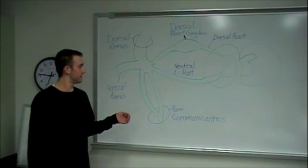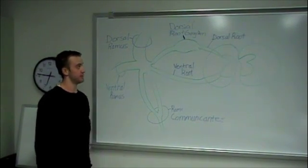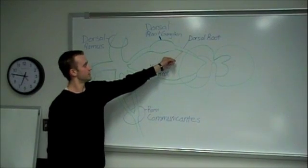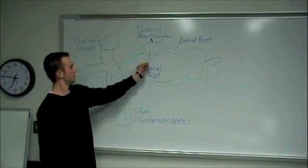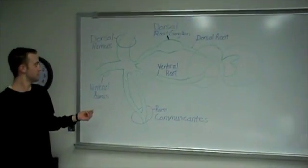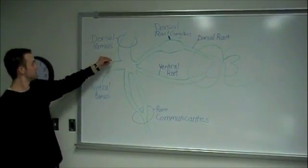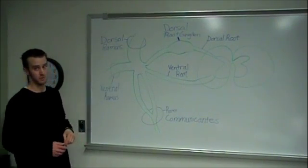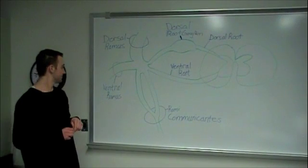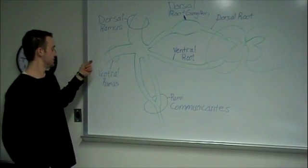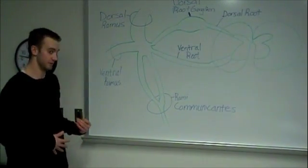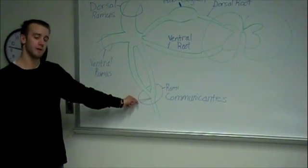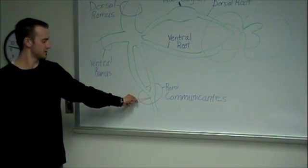Here we have a rough drawing of the spinal cord — look in your book for a better picture. We can see the gray matter, your white matter, the dorsal root, ventral root, and dorsal root ganglion. The big reason we drew this is to show the rami communicantes. Here's your dorsal ramus going to your back, providing innervation to the muscles and bringing in sensory from the skin back there. The ventral ramus provides innervation to the skin and muscles on the ventral side of your body. And the rami communicantes provide innervation to some of your visceral organs in your gut — your stomach, intestines, and such.